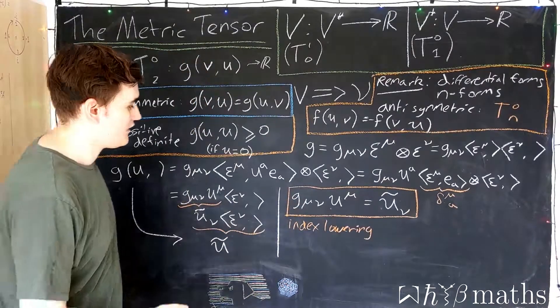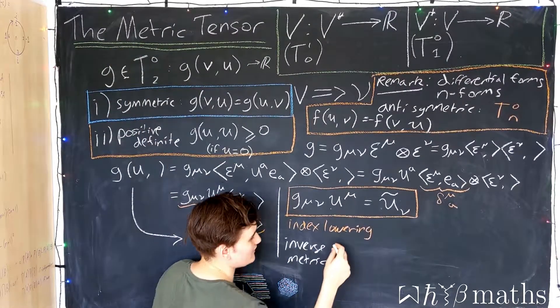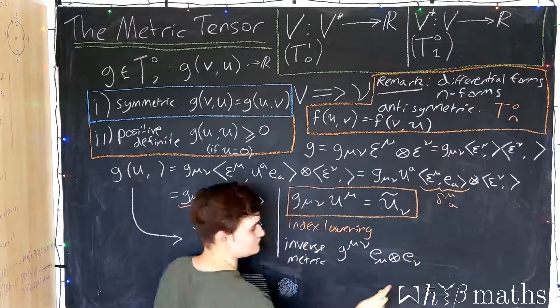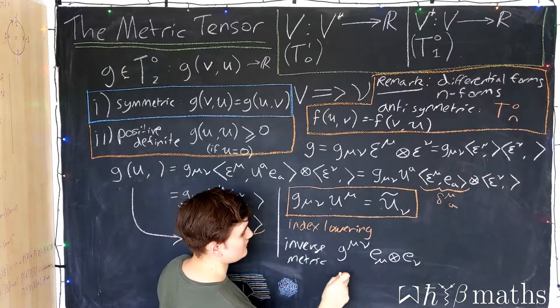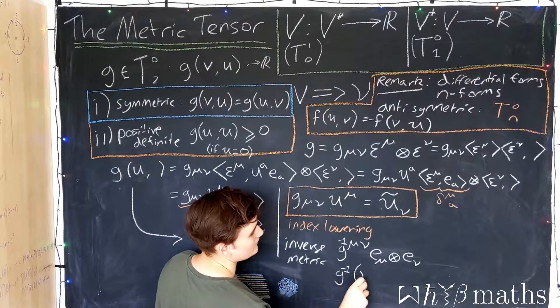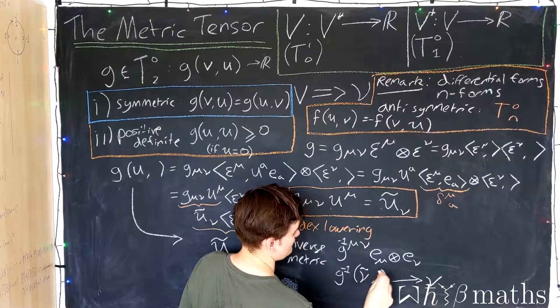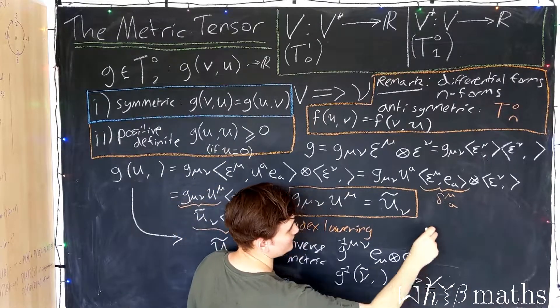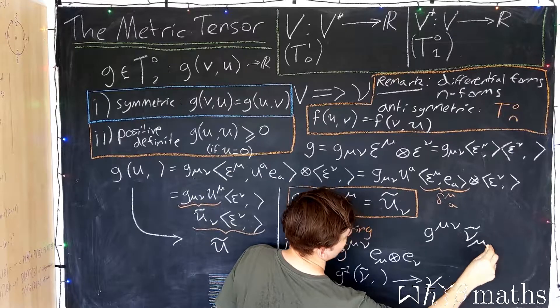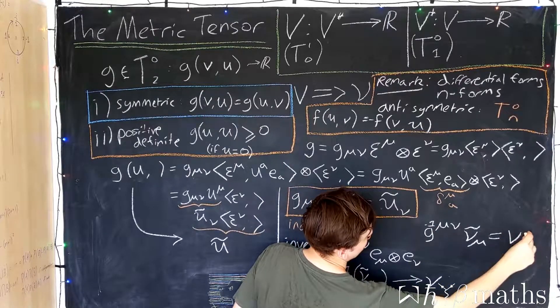So now just as we have the metric, we can define the so-called inverse metric. This is simply a (2,0) tensor which works in the exact same way as the metric in that if we feed it now one dual vector, the result is just the corresponding vector to that dual vector. And you frequently abbreviate this in terms of the components as simply feed the inverse metric a dual vector, and you just get the resulting vector.